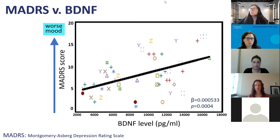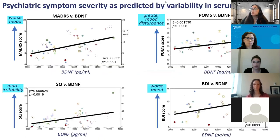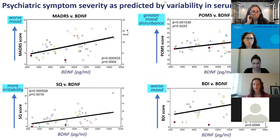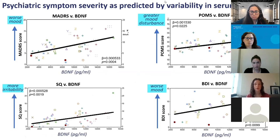This figure allows us to see both the individual data points and the overall relationship between BDNF and mood. This relationship held true through all of the affective measures studied. The figure shows predicted psychiatric symptom severity by variability in serum BDNF on each affective measure: upper left shows MADRS again for reference, upper right shows the Profile of Mood States, lower left shows the irritability symptom questionnaire, and lower right shows the Beck Depression Inventory. As you can see, higher BDNF levels are associated with worse mood, greater irritability, and worse overall psychological distress.